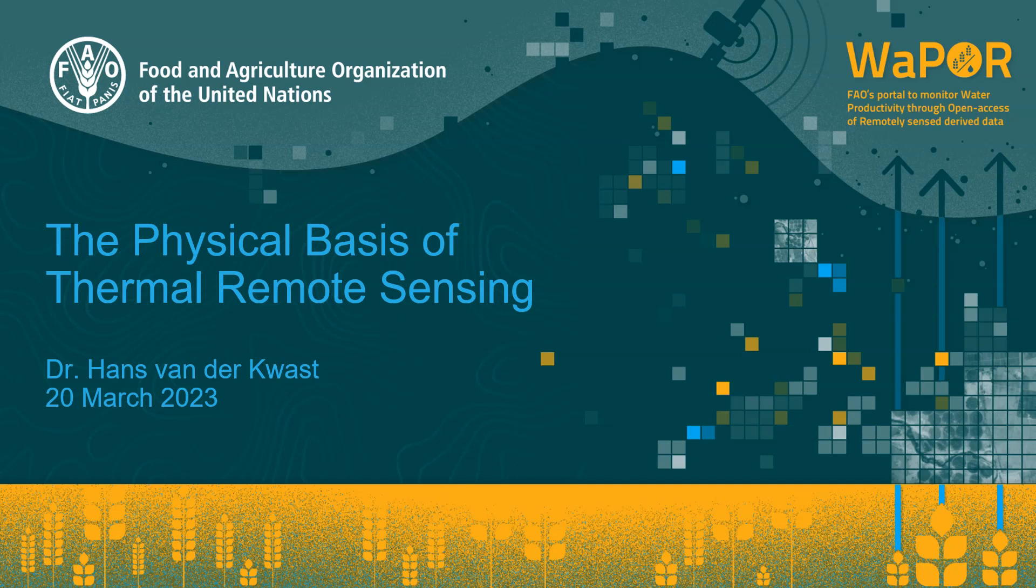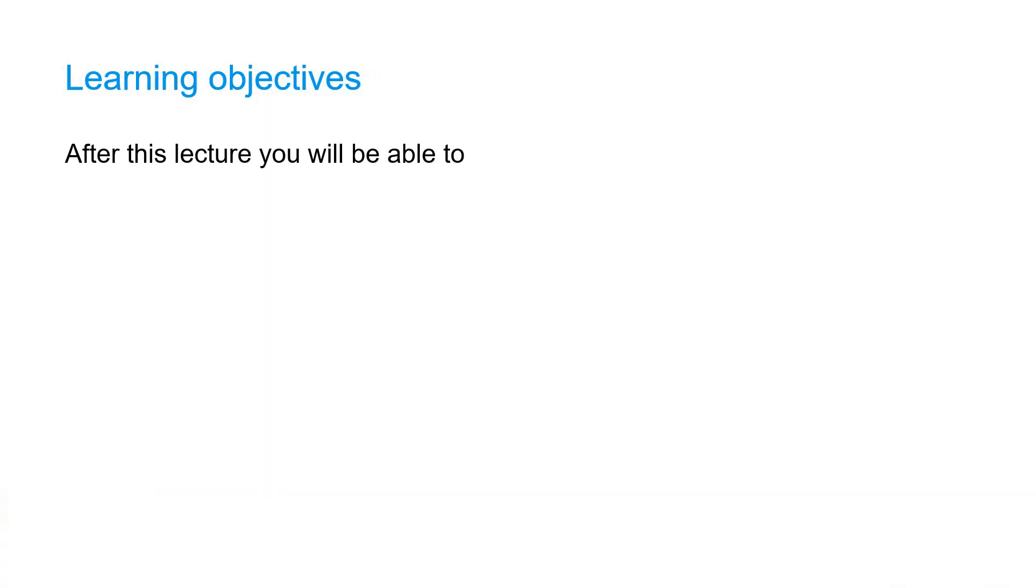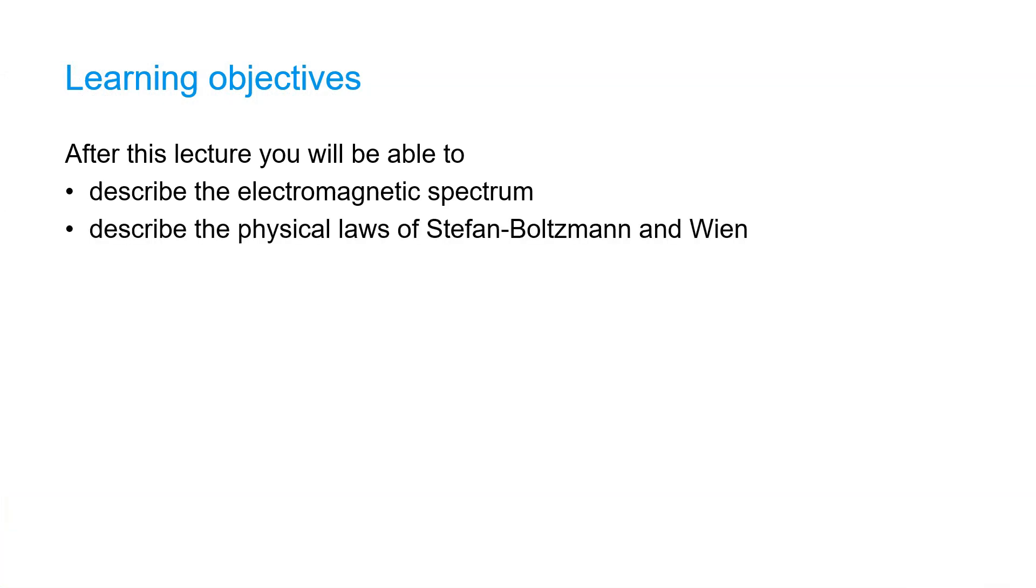My name is Hans van der Kvast. In this video I'm going to explain the physical basis of thermal remote sensing. After this lecture you will be able to describe the electromagnetic spectrum, describe the physical laws of Stefan Boltzmann and Wien, define a black body and explain emissivity.